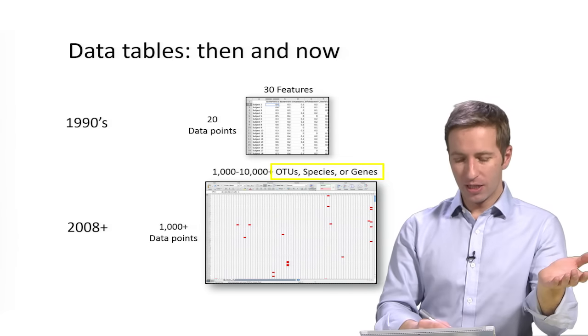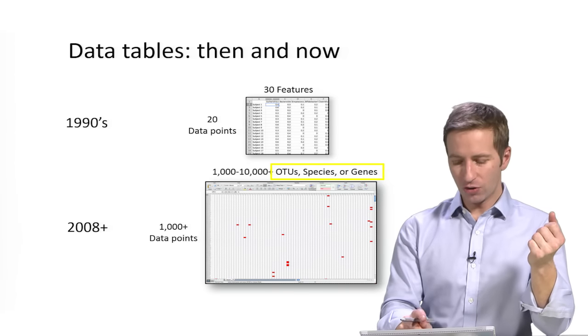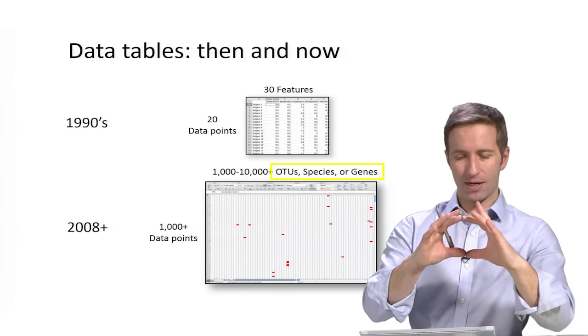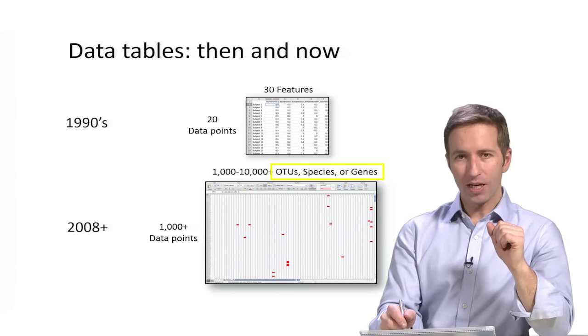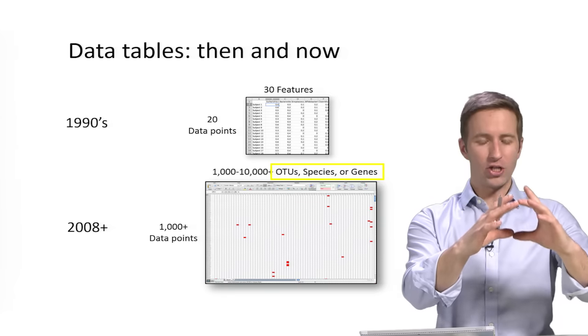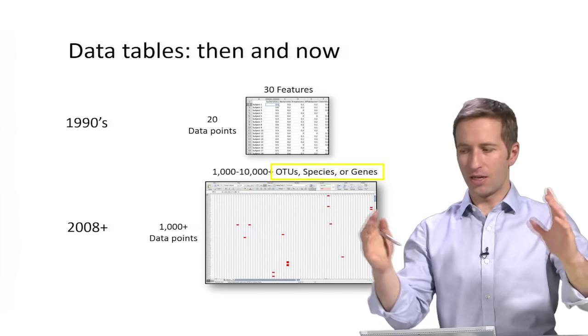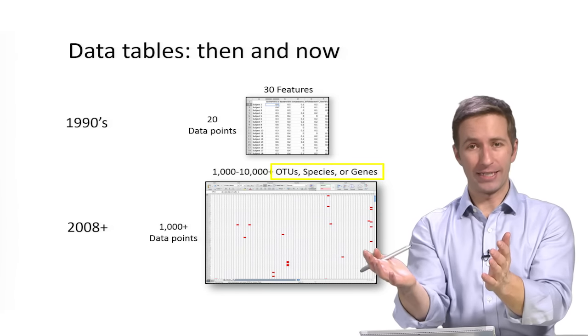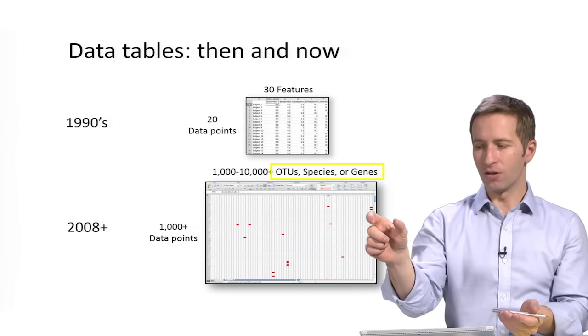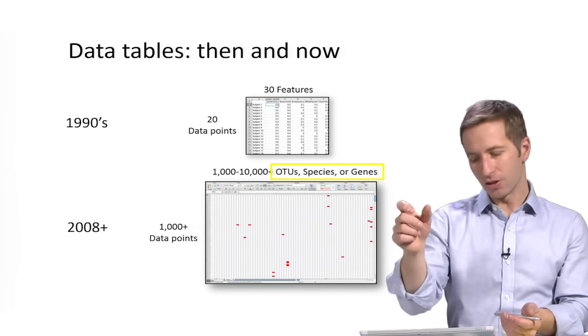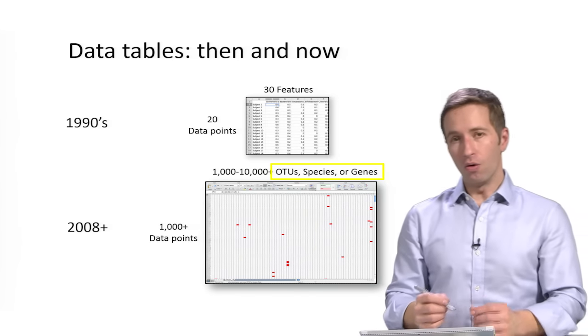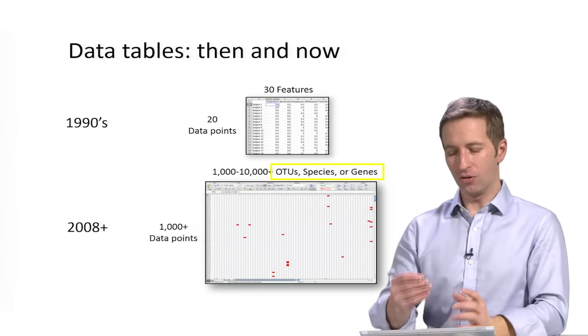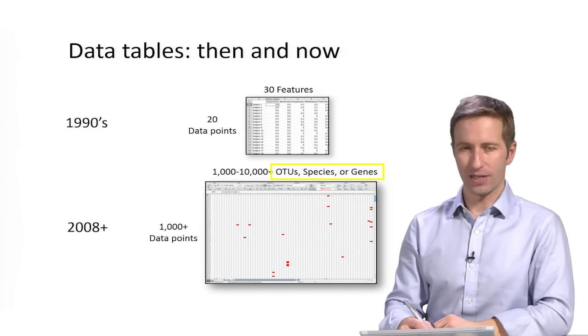And then, as I mentioned, we get these very big data tables. And the features here can either be the OTUs, so those are those little clusters of sequences that we generated. They could be species labels. And that could either mean for each OTU, you took a guess about which species it came from, and then all the OTUs from the same species, you just kind of add them together. Or that can come from the shotgun sequencing data where you've taken every single sequence, found out what species it probably came from, and then you just count out how much of each species it came. Or you could tabulate how many of each gene or each type of gene was seen in the data. And you can also collapse genes into functional pathways.